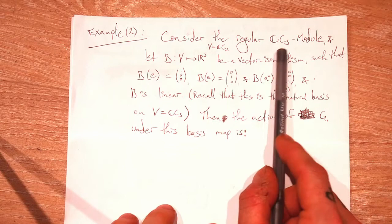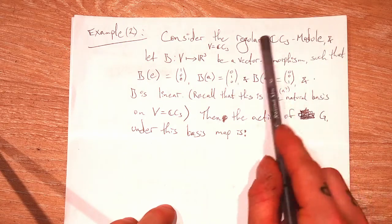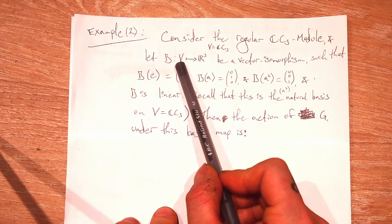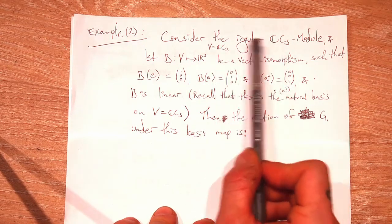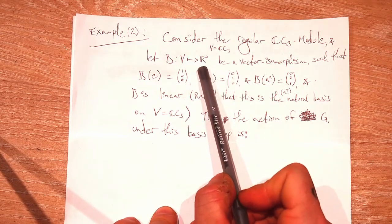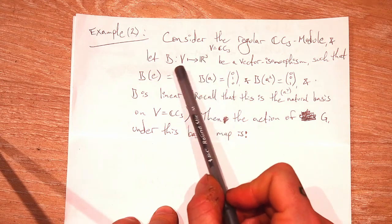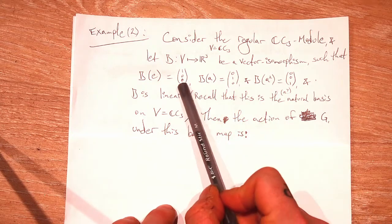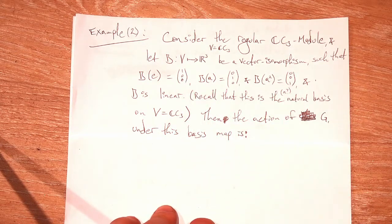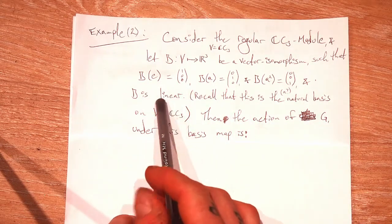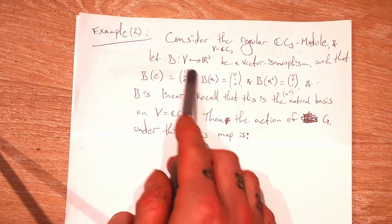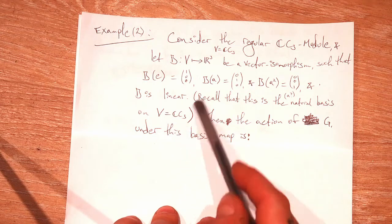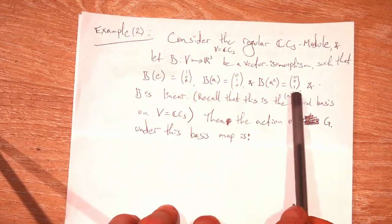Consider the regular CC3 module — the guy we just looked at in the last example. And let this map B map from our vector space, which is the group algebra CC3, to R3. Let B be a vector isomorphism such that we map our basis elements to the basis elements of R3. Then we extend B linearly so we know what it does to the basis elements, and we can just pull out scalars. We're just saying it's linear. Recall that this is the natural basis for our vector space.